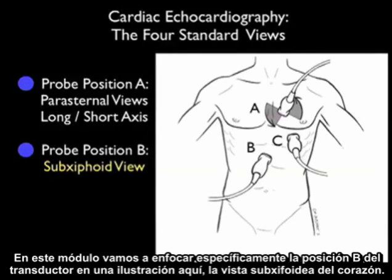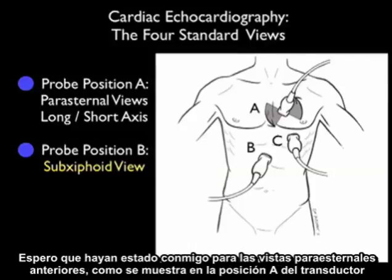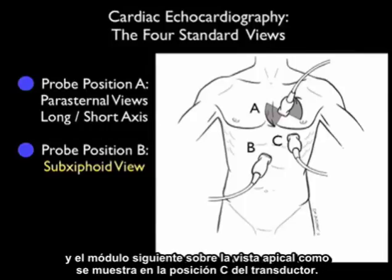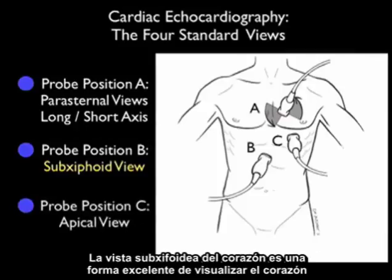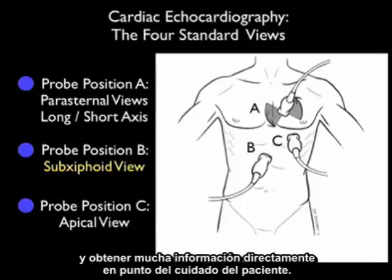In this module, we're specifically going to focus on probe position B as shown in the pictorial here — the subxiphoid view of the heart. Hopefully you've joined me prior for the parasternal views shown in probe position A, and an upcoming module on the apical view shown in probe position C. The subxiphoid view is an excellent way of imaging the patient's heart and getting a lot of information directly at the bedside.